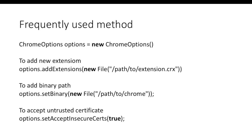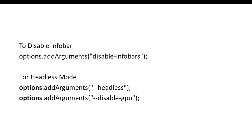If your binary doesn't load with your Chrome browser and you are getting some exception related to binary, you can set the binary path using the setBinary method. If you have worked with SSL certificates or untrusted certificates and want to accept them, you can call setAcceptInsecureCertificates and set it to true. You can also add arguments that don't come as a dedicated method — you just pass the argument directly and it will be applied to your Chrome browser.